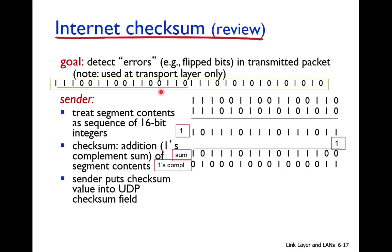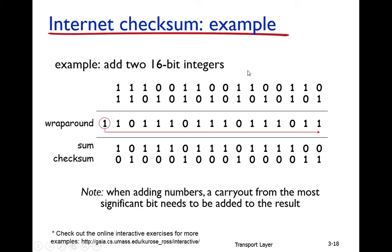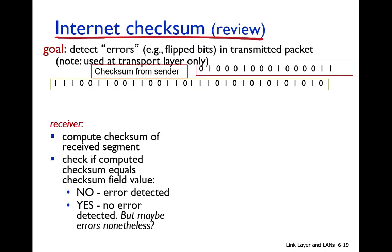The data along with this checksum is sent to the receiver. This checksum mechanism is used in UDP, TCP, and IP. The sender transmits both the data and the checksum. The receiver receives the data rows and the checksum, recomputes the checksum for the received data, and compares it.